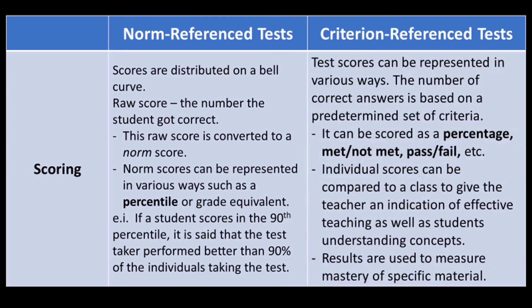For Criterion Reference Tests, test scores can be represented in various ways. The number of correct answers is based on a predetermined set of criteria. It can be scored as a percentage, met or not met, pass or fail, etc. Individual scores can be compared to a class to give the teacher an indication of effective teaching as well as students' understanding of concepts. Results are used to measure mastery of specific material.